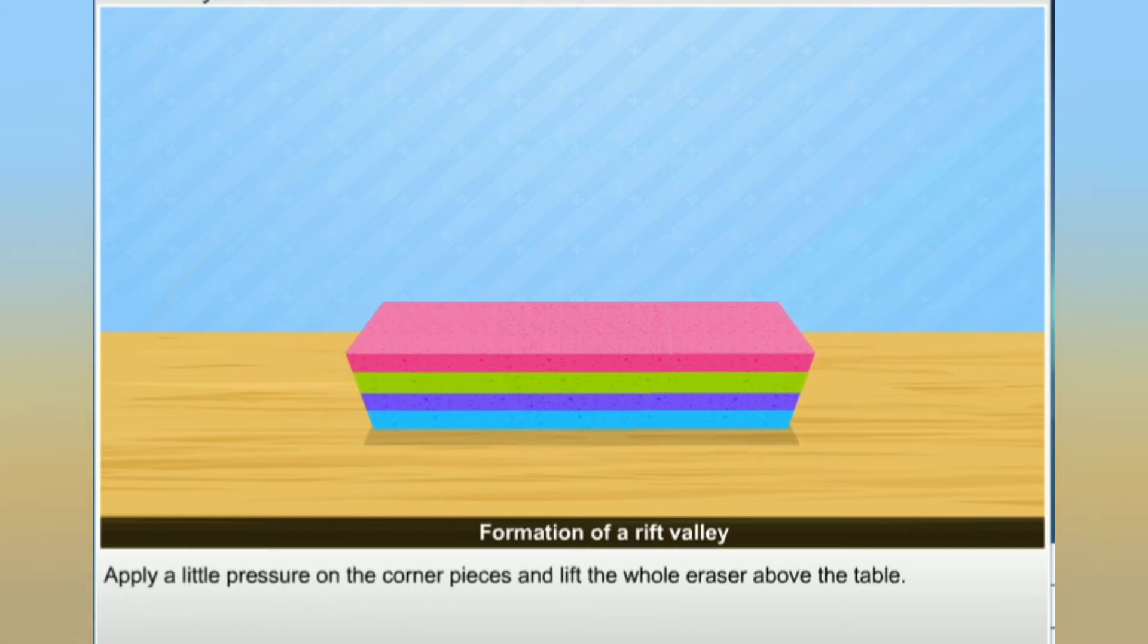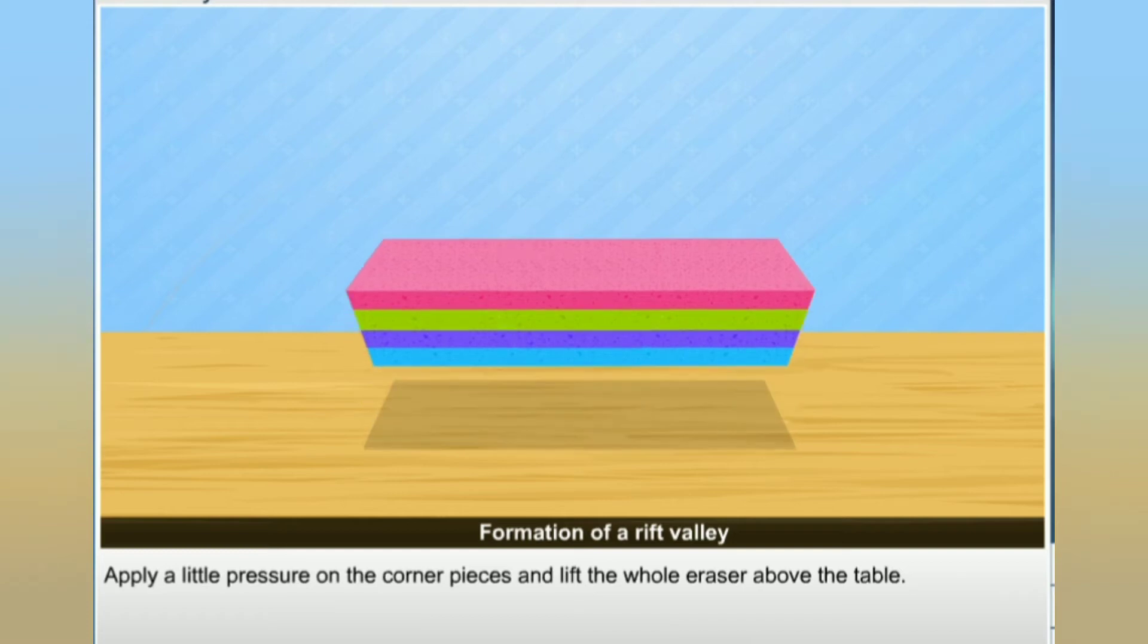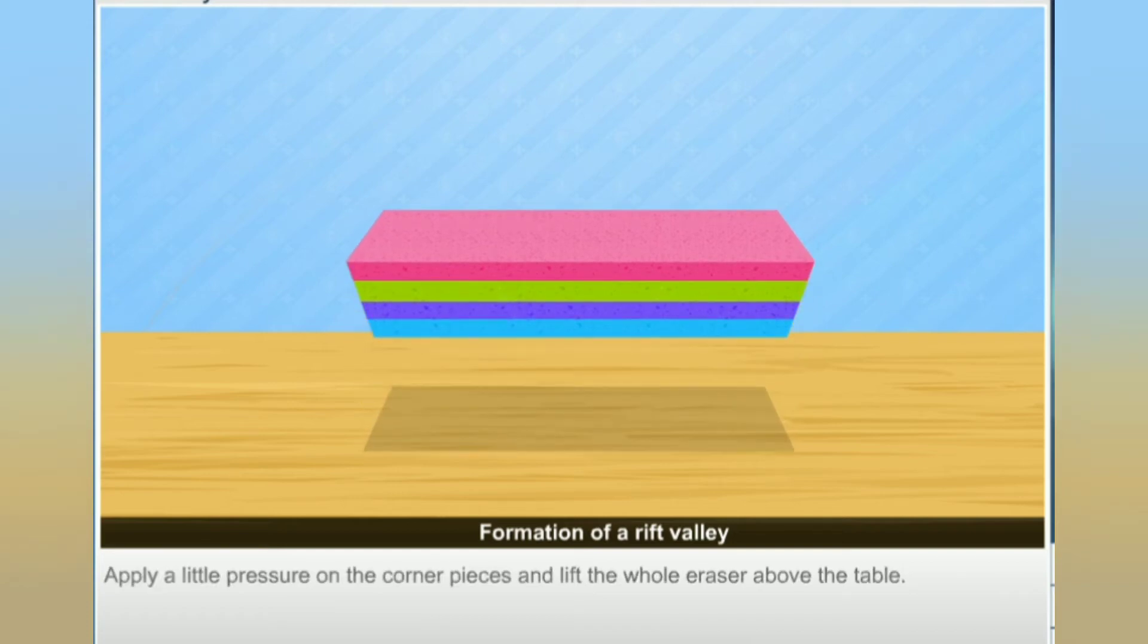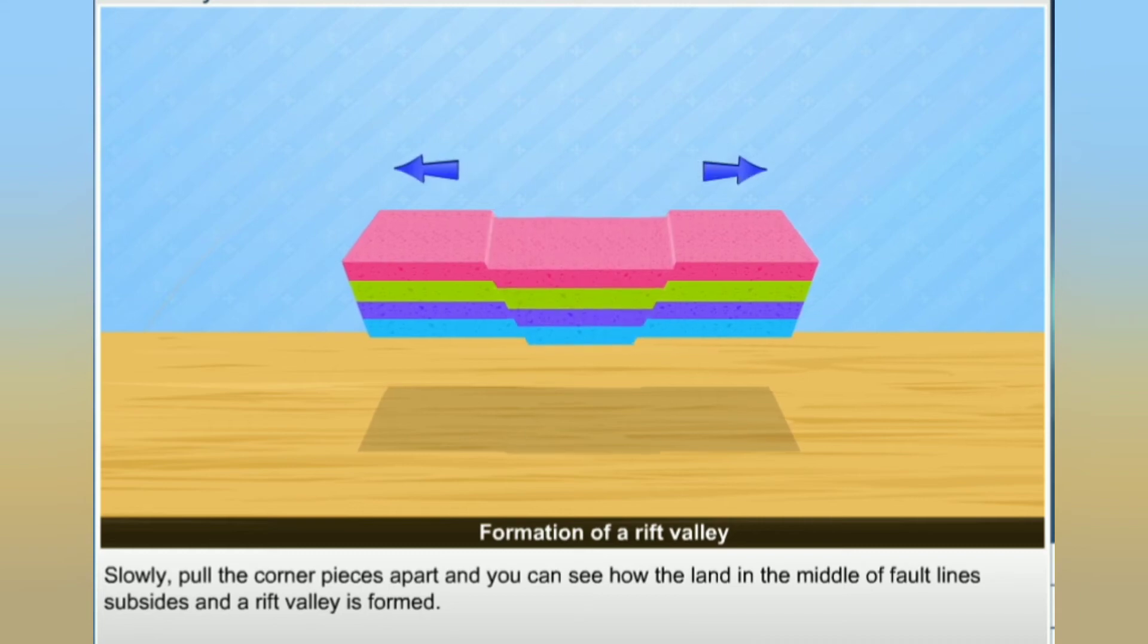Apply a little pressure on the corner pieces and lift the whole eraser above the table. Slowly pull the corner pieces apart and you can see how the land in the middle of fault lines subsides and a rift valley is formed.